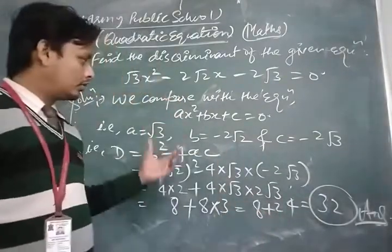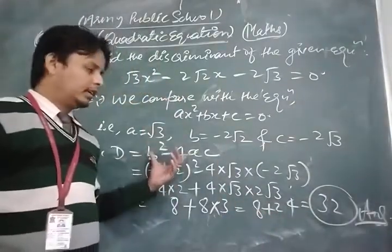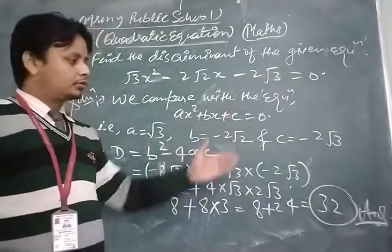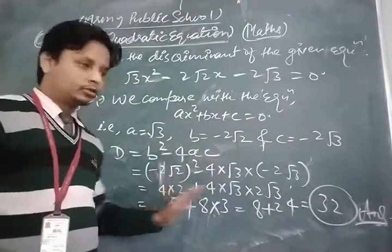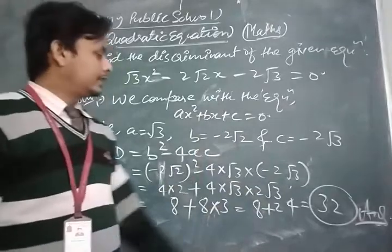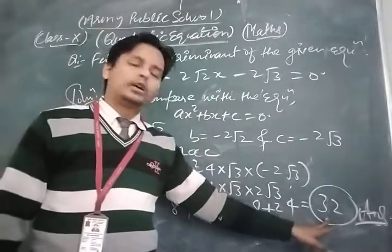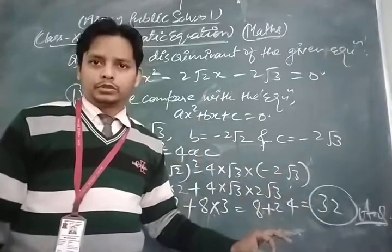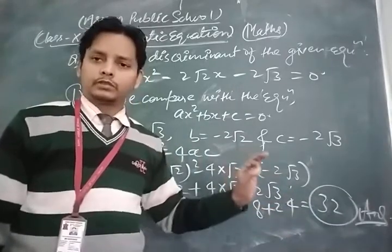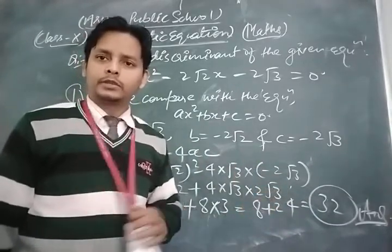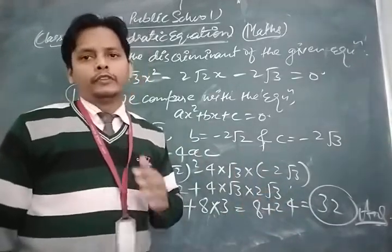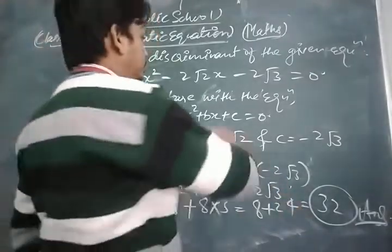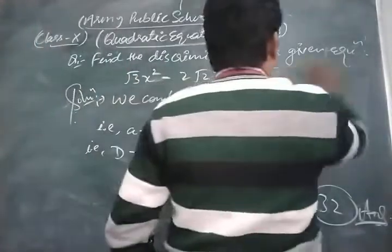So in this way, using the concept of discriminant, we find the discriminant of the given equation using the formula. Thus the discriminant D = 32. In this way, you can solve this type of question. This is one of the most important topics of the chapter.